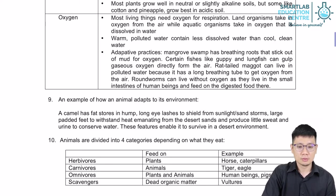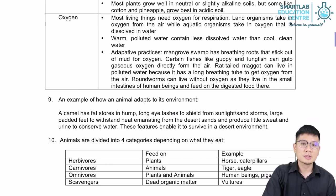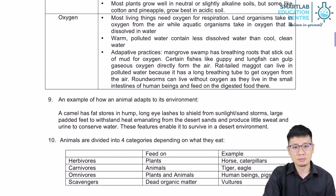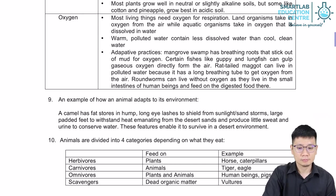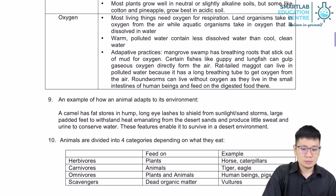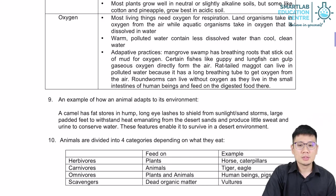Herbivores are animals that feed on plants. Carnivores are animals that feed on other animals. Omnivores are animals that feed on both plants and animals as part of their normal diet. Scavengers are animals that feed on dead or decaying organic matter. In addition to these four categories, we can also use other terms when we talk about a food chain or food web.